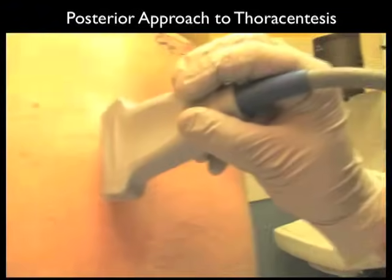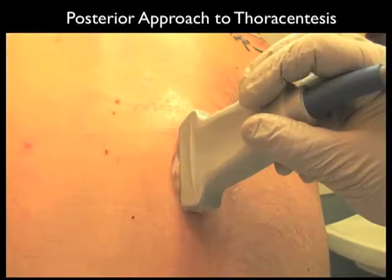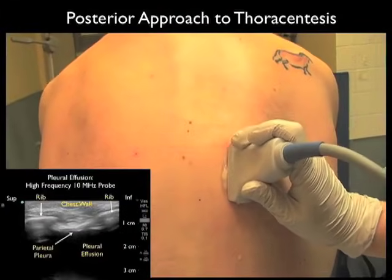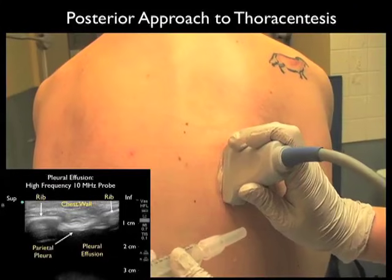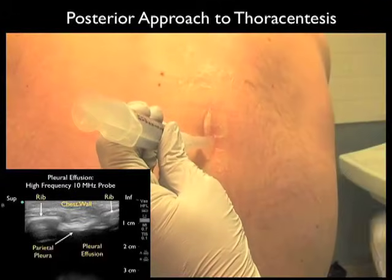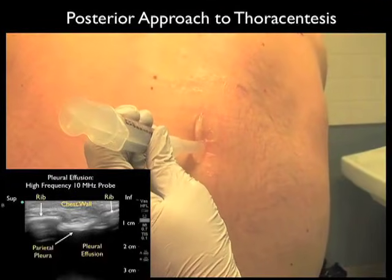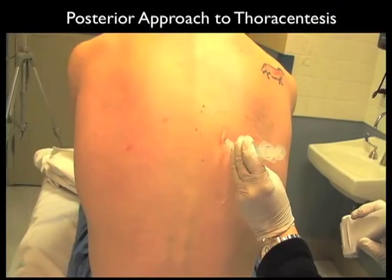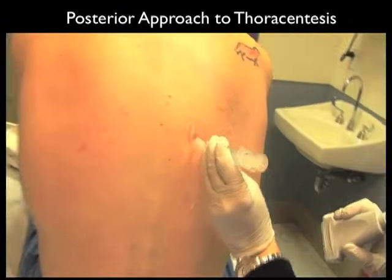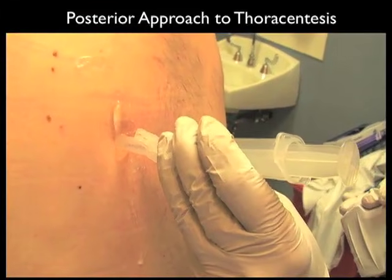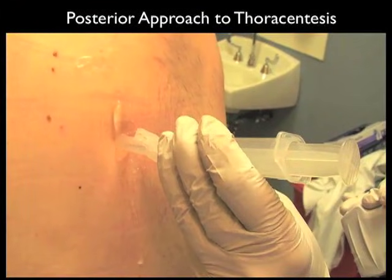In this video clip we'll first place the high frequency 10 megahertz probe along the posterior aspect of the chest wall to define the proper orientation for the puncture for the posterior approach to the thoracentesis procedure. The needle can then come in directly underneath the probe as shown here. Now I'll show a wide angle shot — note this is the proper position for the thoracentesis needle as defined by sonography from the posterior approach to thoracentesis.